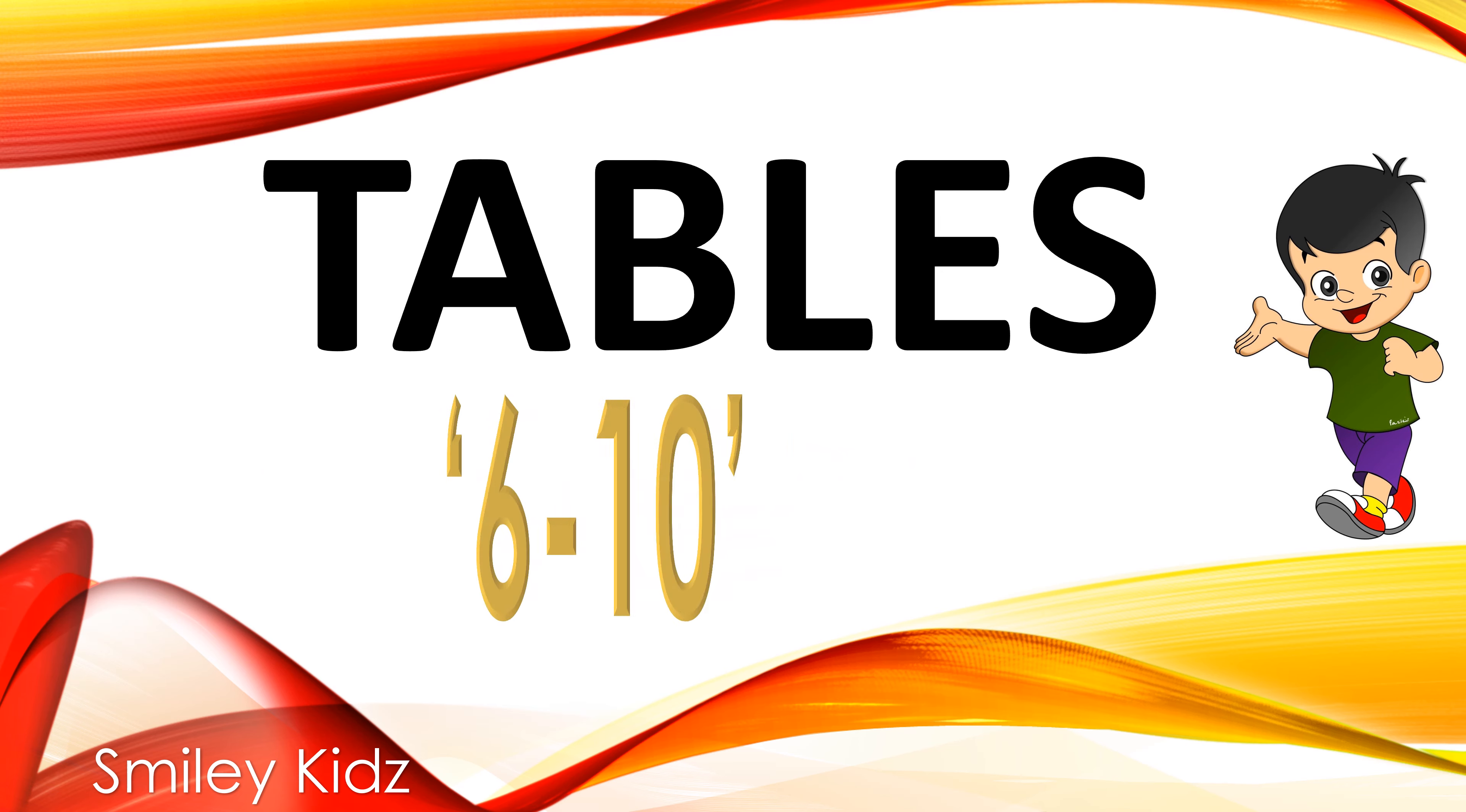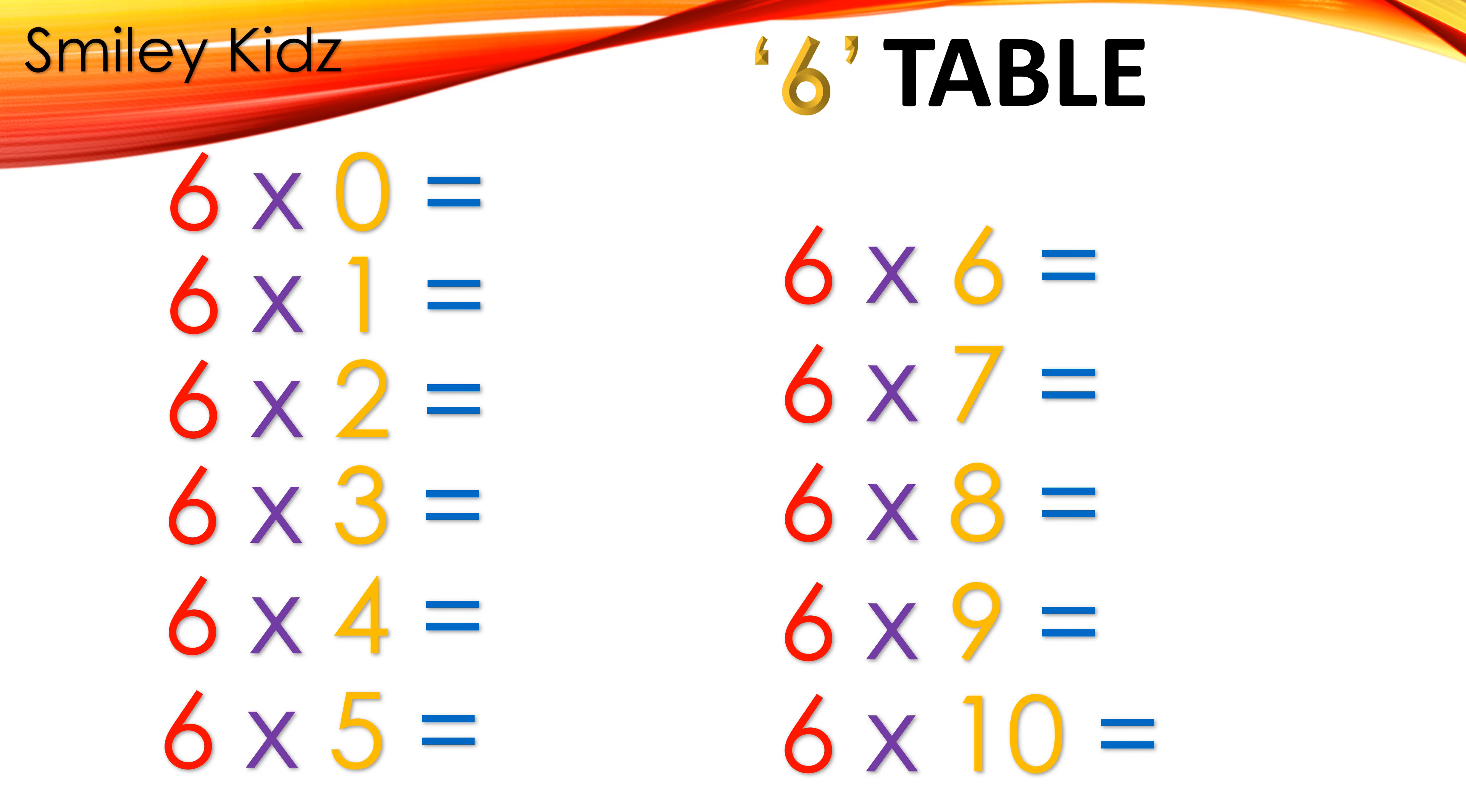Tables 6 to 10. 6 table: 6 times 0 is 0, 6 times 1 is 6, 6 times 2 is 12, 6 times 3 is 18, 6 times 4 is 24, 6 times 5 is 30, 6 times 6 is 36, 6 times 7 is 42, 6 times 8 is 48, 6 times 9 is 54, 6 times 10 is 60.